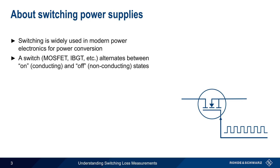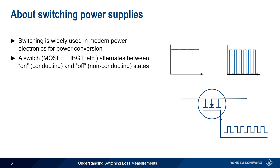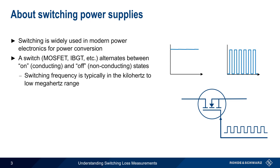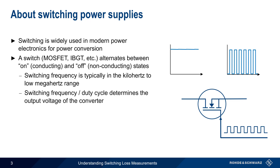This causes a constant input at the switching device to be chopped into pulsed DC. The frequency at which this device is switched on and off is usually on the order of kilohertz to low megahertz, and the output voltage of the converter is primarily determined by the switching frequency or switcher duty cycle.